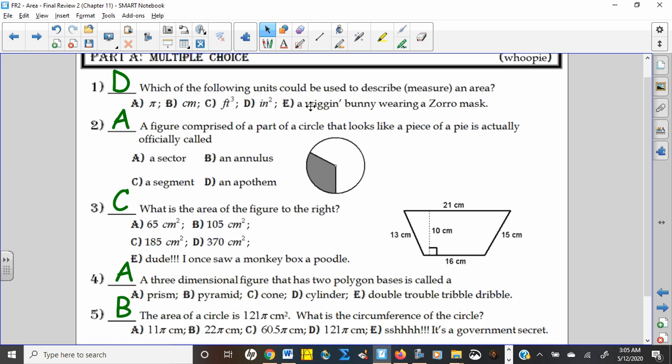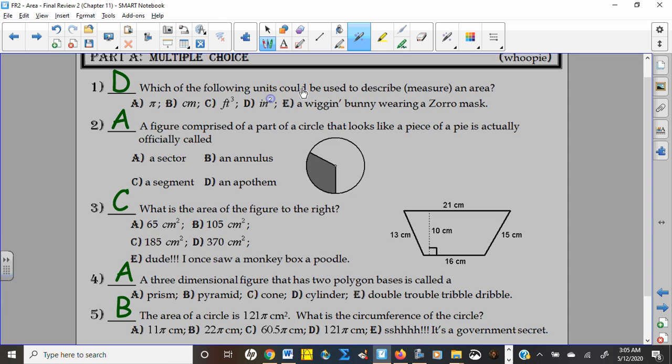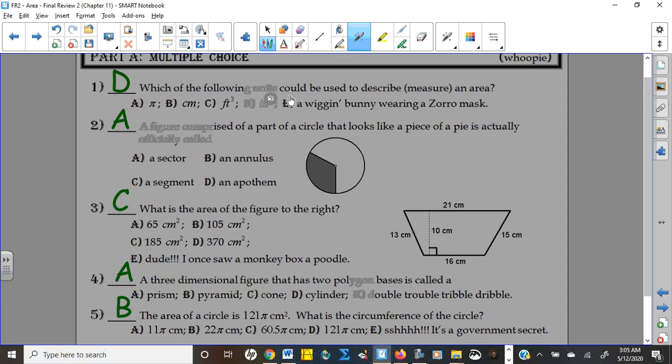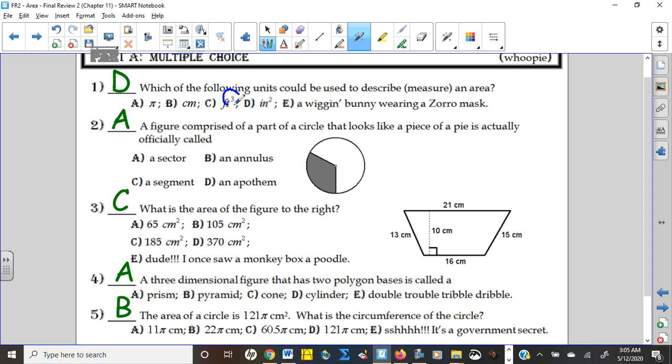So anything that is a squared unit is what we're looking for for area, as opposed to volume, which is three-dimensional. Then you'd want the cube, and anything that's just a simple length would be one dimensional.